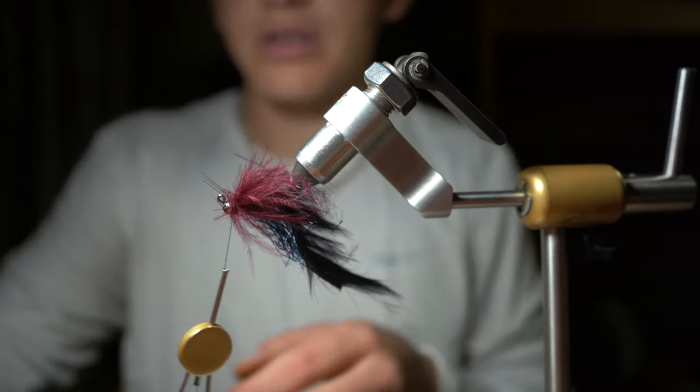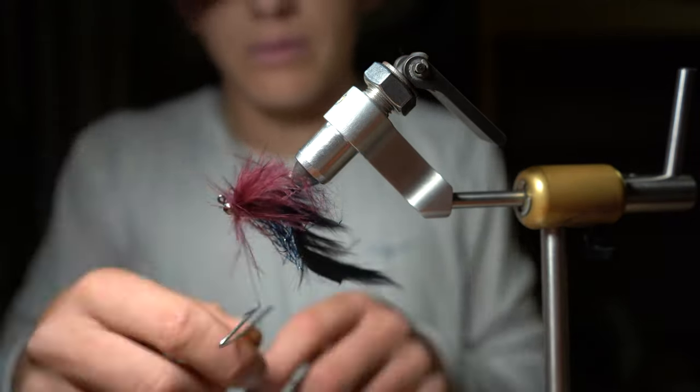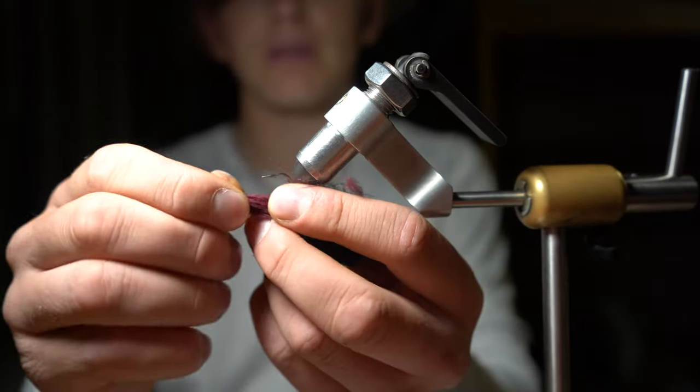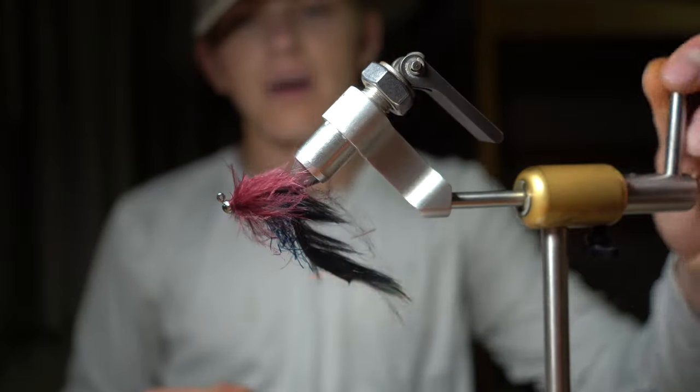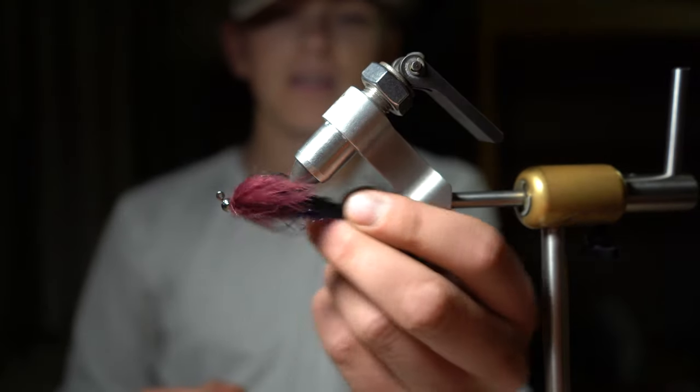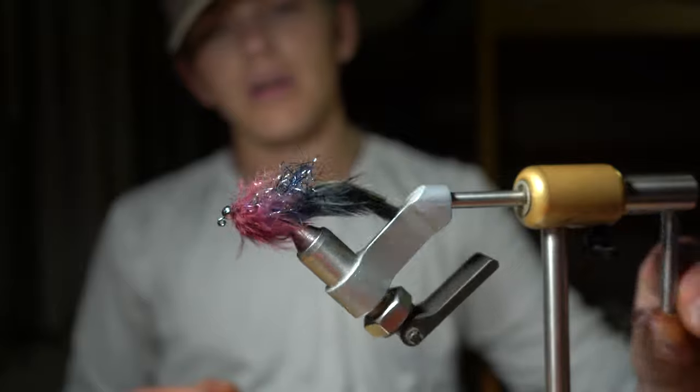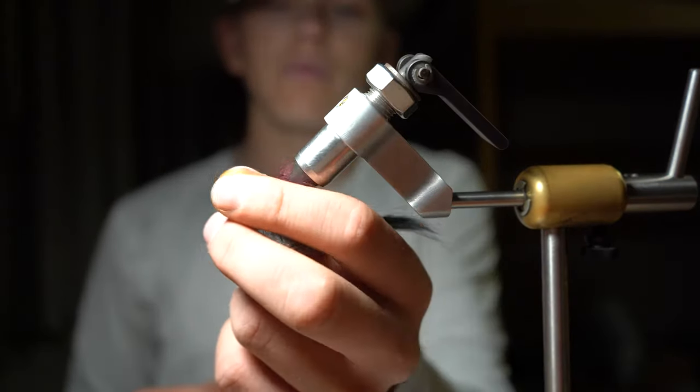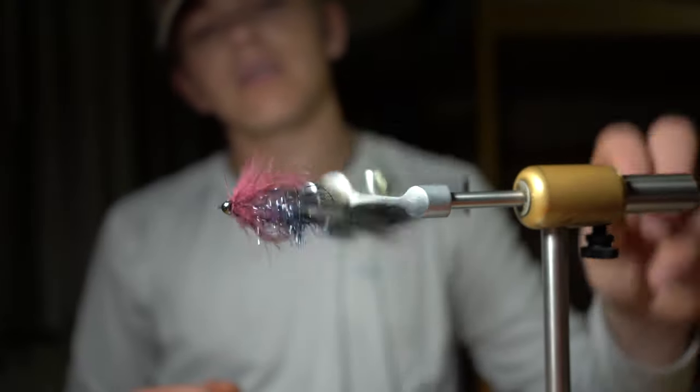And there we are! That is how we tie our size 8 black and wine jig streamer with UV puller chenille, black rabbit strip, and wine collar.